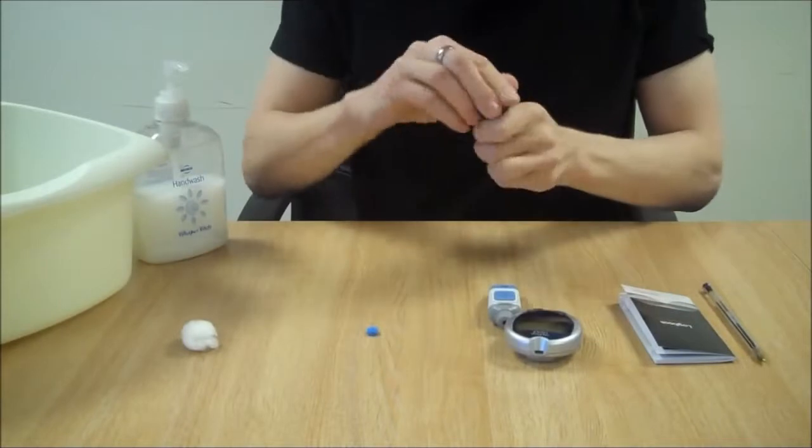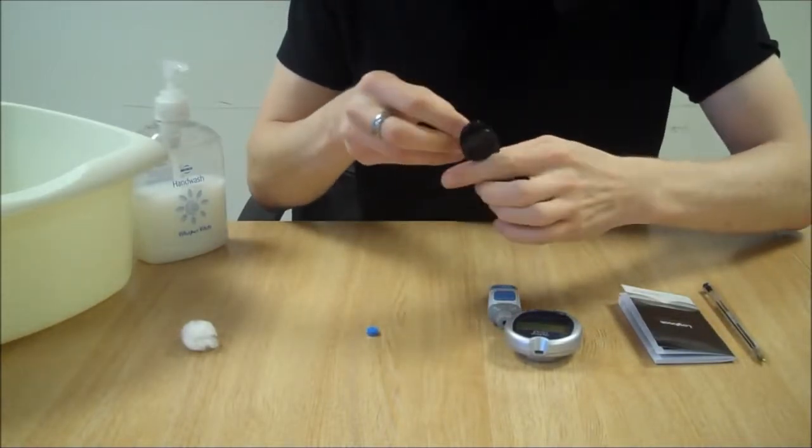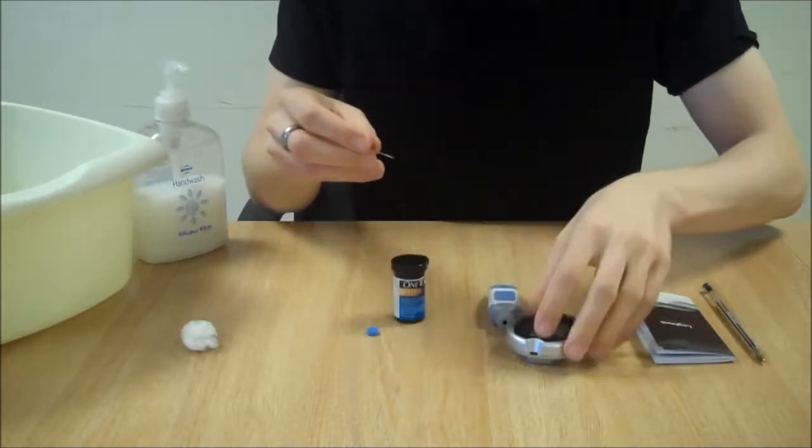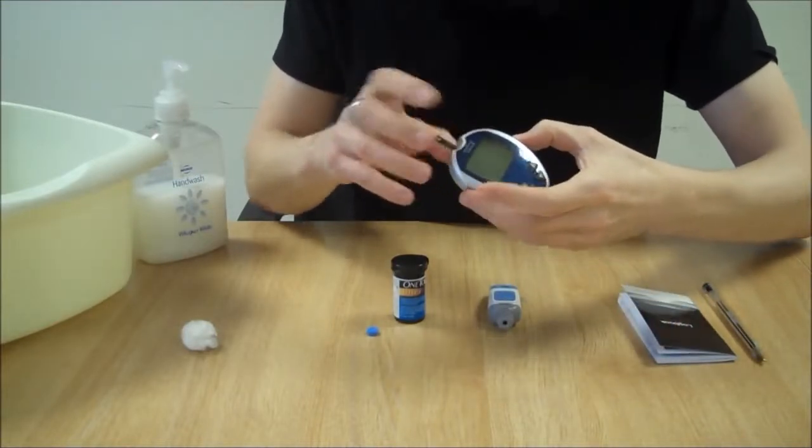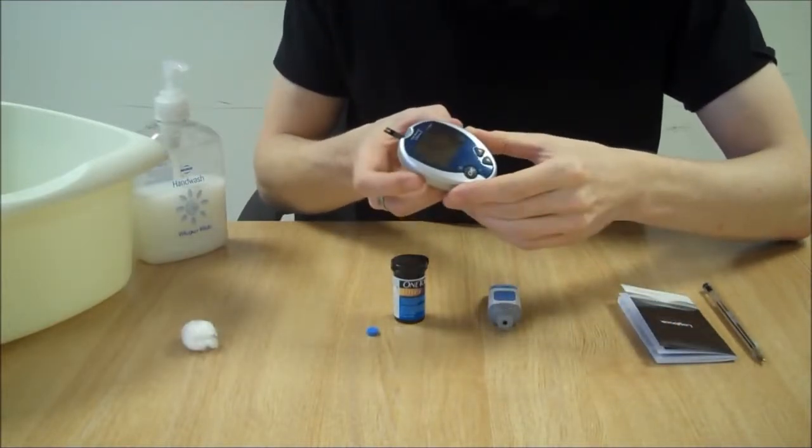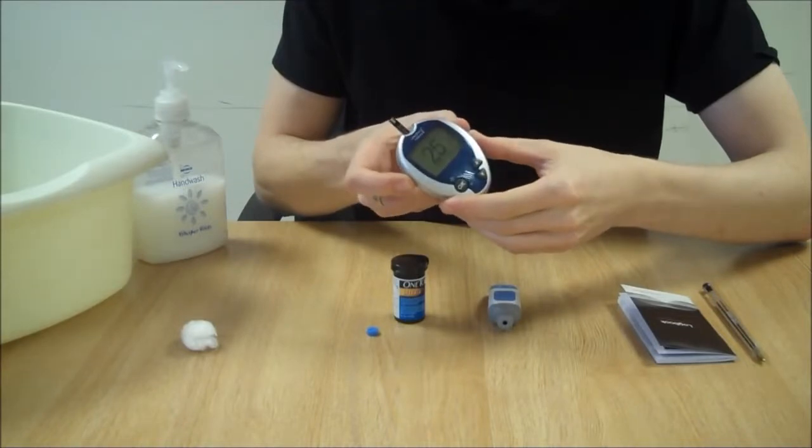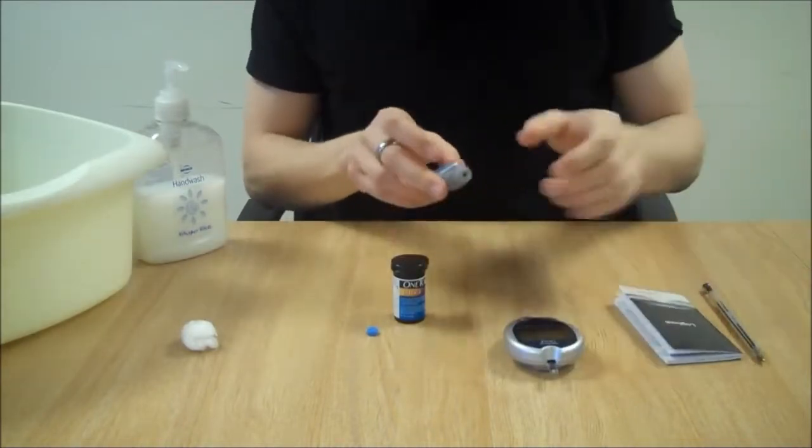Load a test strip into the blood glucose meter. This one switches on as you put the test strip in.